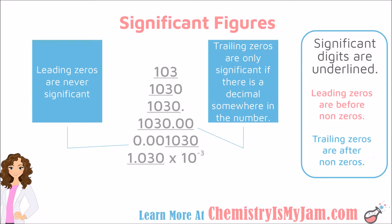A scientist is going to be very intentional about their decimal points. If a scientist puts a decimal there, they are letting their reader know that the piece of lab equipment they were measuring from was capable of measuring to that degree of accuracy. That needs to be a significant digit in order for their measurement to be valid. In the next example, the 1, 0, and 3 are significant digits. These zeros are trailing zeros, and they are significant because there is a decimal somewhere in the number. This example has six significant figures.